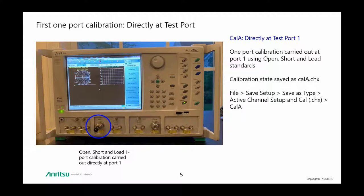We begin by setting the start and stop frequencies and the number of points — choosing a higher number of points for better resolution. A one-port calibration is carried out directly at the test port by connecting open, short, and load calibration standards one at a time. The state is saved as CalA and contains setup details such as frequencies, number of points, and the calibration data itself. Since no second port is involved, there is no need to use a through standard.